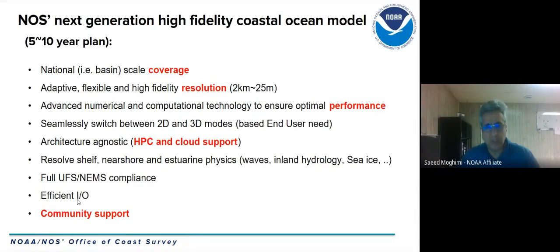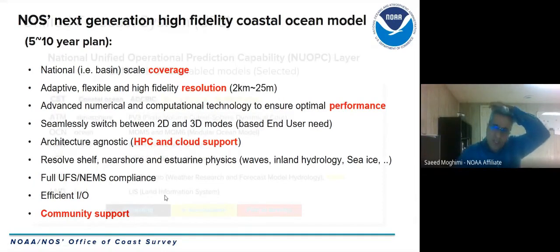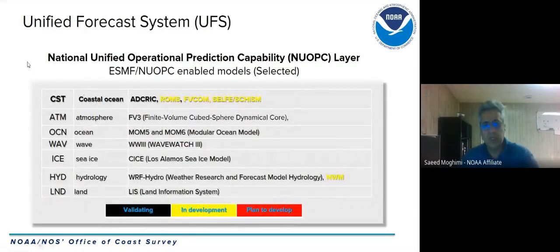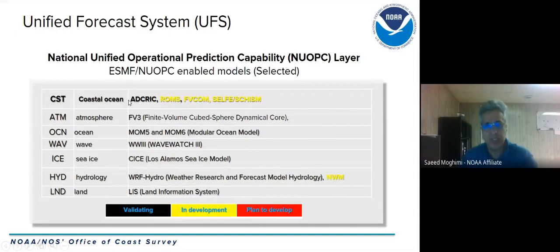High-resolution efficient I/O may become a bottleneck going forward. Most importantly for National Ocean Service, we always want to maintain very strong community support for model development. Right now at National Ocean Service we have four coastal ocean models in operation: ADCIRC, ROMS, FVCOM, and SELFE/SCHISM.